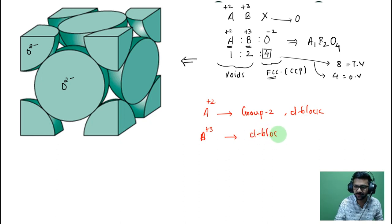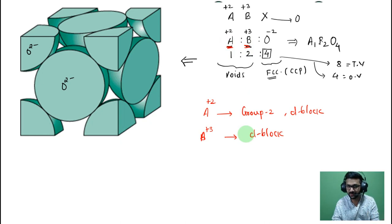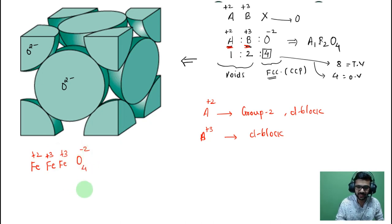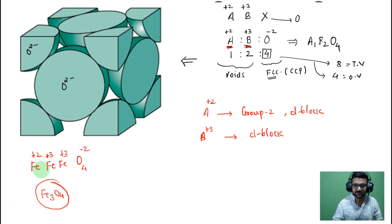For example, we can have Fe in a +2 oxidation state and Fe in a +3 oxidation state. With oxygen in a -2 oxidation state appearing four times, the compound can be written as Fe₃O₄, which is a well-known spinel compound.